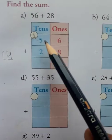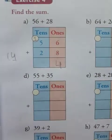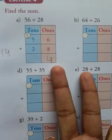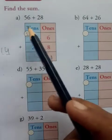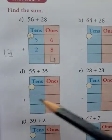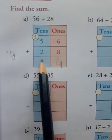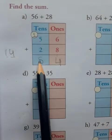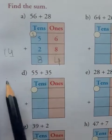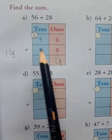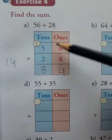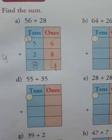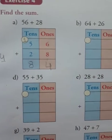Now, 5 plus 2: 5, 6, 7. But you also add this carry: 7 plus 1 is equal to 8. It means 56 plus 28 is equal to 84.